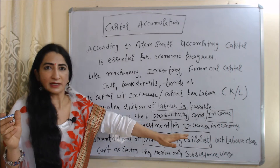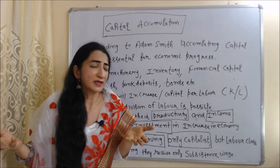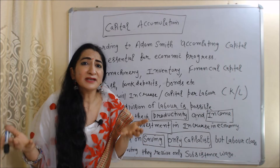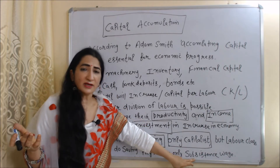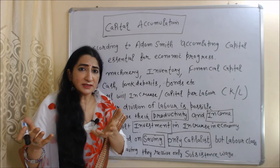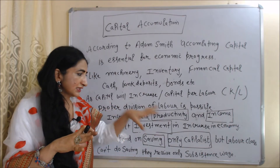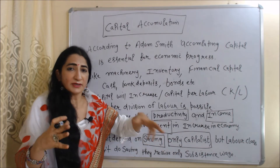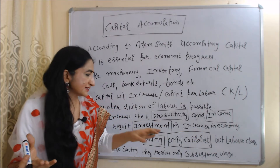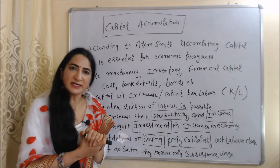According to Adam Smith, investment depends on saving, and only the capitalistic class can save — not the labor class. The capitalistic class earns more and can save, but the labor class earns very little; they receive wages at subsistence level, meaning wages for survival only, not for saving. So only the capitalistic class can save, and since saving equals investment, more saving means more investment in the economy.